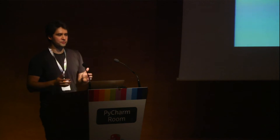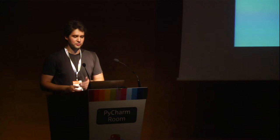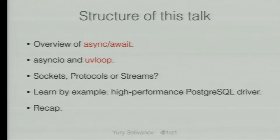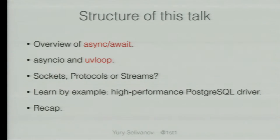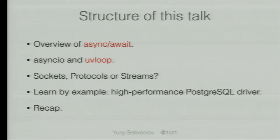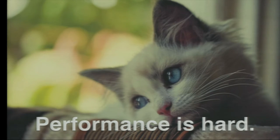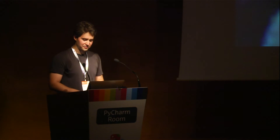Structure of the talk. I wanted to tell you so much about how to write high performance code in Python and with asyncIO in particular, but unfortunately I had to cut about 50% of my slides. So we'll briefly start with an overview of async/await, then quickly cover asyncIO and uvloop, then answer how you should write your protocols using sockets or protocols, or maybe streams. Then I'll present something new - a new high performance driver that I open sourced about two hours ago. Then we'll recap. There will be no funny cat slides because performance is hard - only sad and depressed cats.